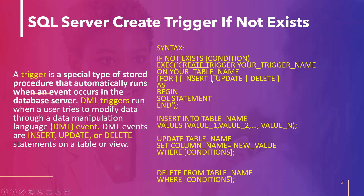After that, we use the execute part — execution means that if we execute this part, all the DML statements will be written out. In the execution part, first we write CREATE TRIGGER, then the trigger name (user's choice), then ON your table name, then the INSERT, UPDATE, and DELETE statements which are part of DML. In the AS block we can use the DECLARE part for new values, followed by the INSERT, UPDATE, and DELETE statements syntax.